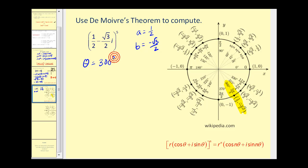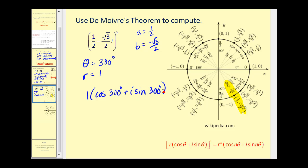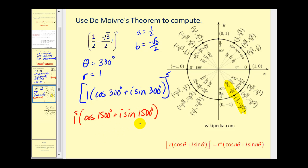Let's use 300 degrees. Since this point is actually on the unit circle, r equals one. So we have one times cosine 300 degrees plus i sine 300 degrees, and we're raising this to the fifth power. Using De Moivre's theorem, we'll have one to the fifth times cosine of five times 300, which is 1500 degrees, plus i sine 1500 degrees. To find the least positive coterminal angle, we divide 1500 by 360, getting a quotient of four with a remainder of 60. So this is coterminal to a positive 60-degree angle.